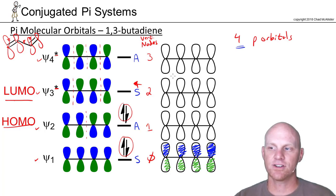And then, like I said, your highest energy molecular orbital, in this case pi four star, is also equally easy to draw because they always just alternate all the way across.